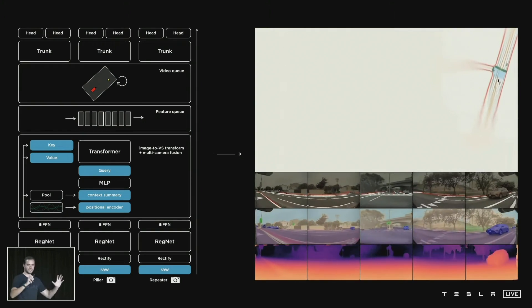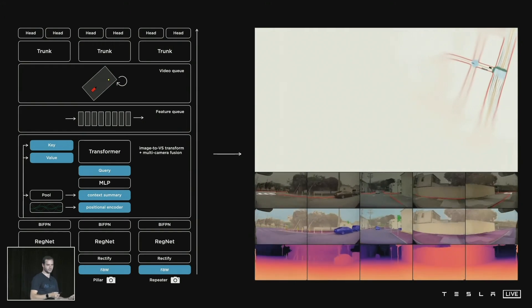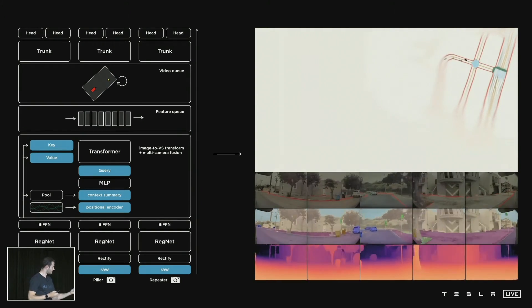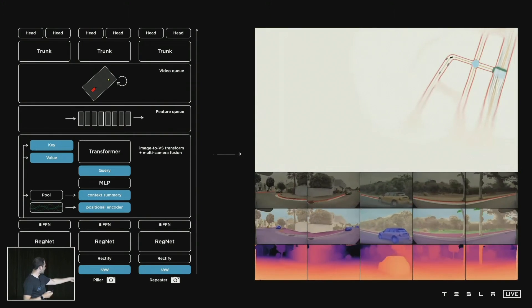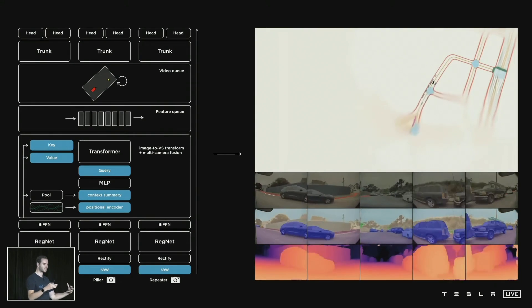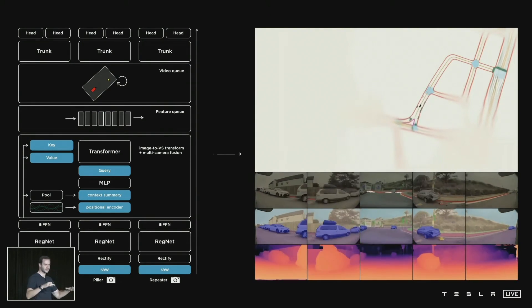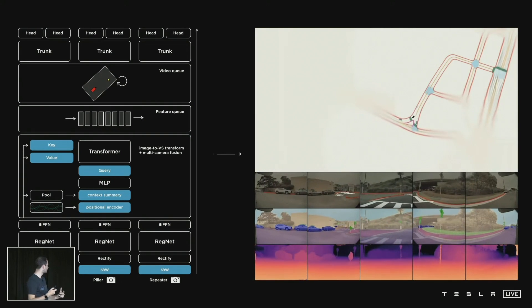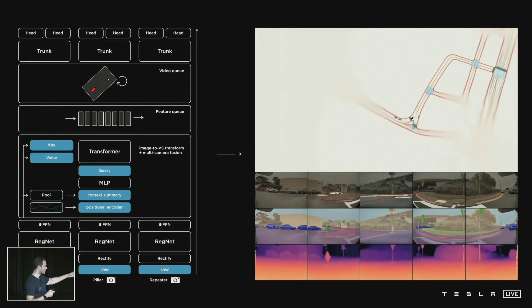Here's putting everything together. This is what our architecture roughly looks like today. We have raw images feeding on the bottom. They go through a rectification layer to correct for camera calibration and put everything into a common virtual camera. We pass them through regnets, residual networks.